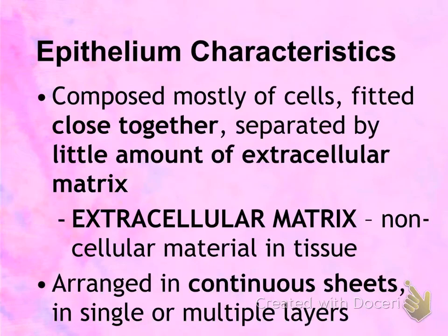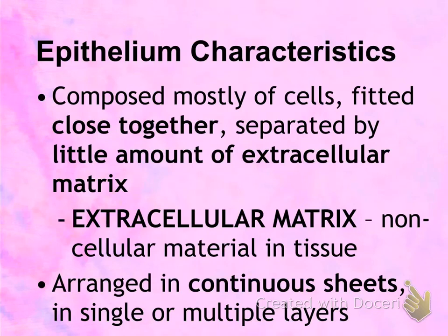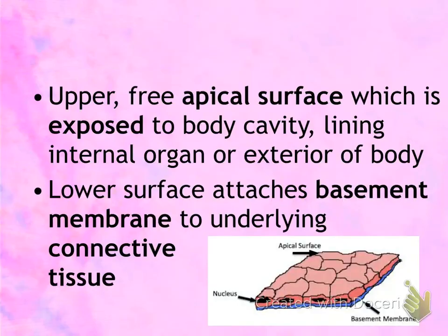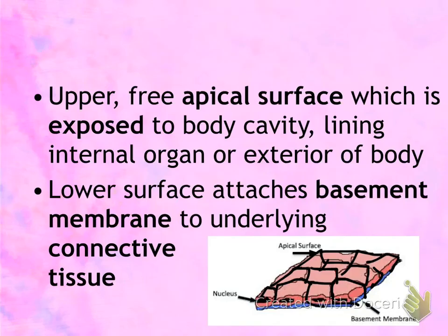There are certain characteristics of epithelium that make it distinct from the other three types of tissue. Epithelial tissues are composed mostly of cells that are fitted closely together with very little extracellular matrix. Extracellular matrix is the non-cellular portion of tissue. Epithelial tissue is also arranged in continuous sheets, which can be a single or multiple layers. Think of jigsaw puzzle pieces that fit closely together and create a flat surface.